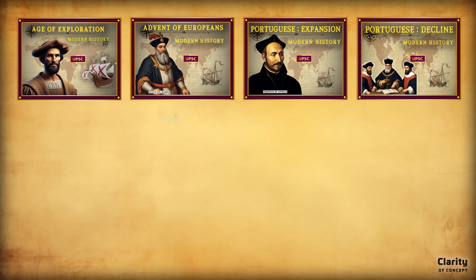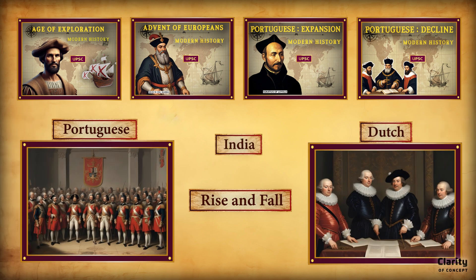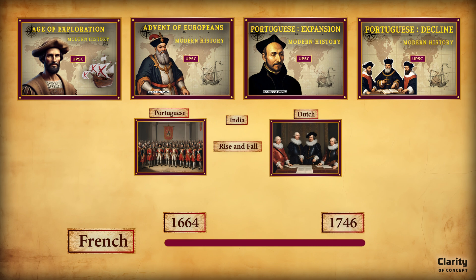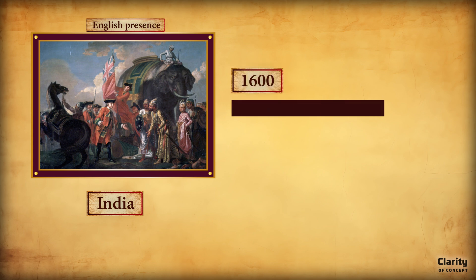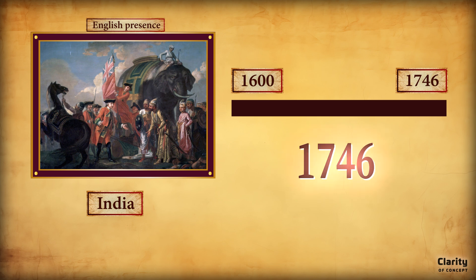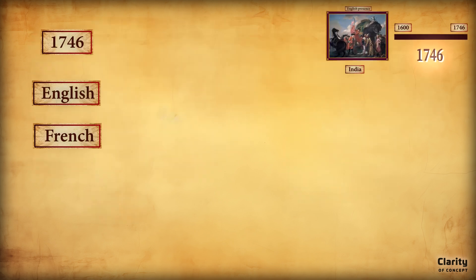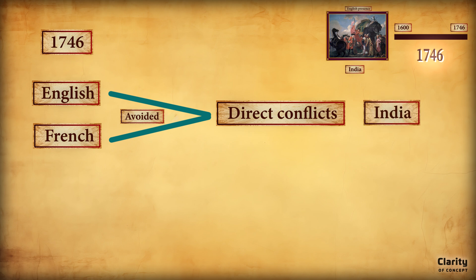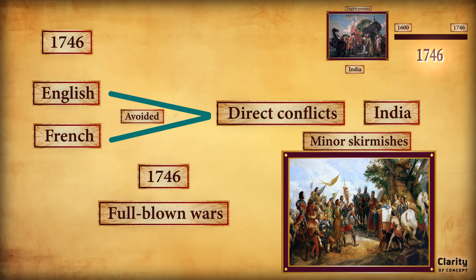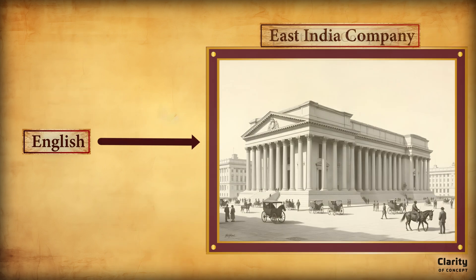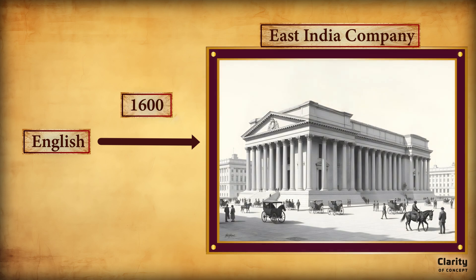In the last few videos, we explored the rise and fall of the Portuguese and the Dutch in India, followed by the story of the French from 1664 to 1746. In this video, we shall focus on the English presence in India, tracing their journey from 1600 to 1746. We have already explained in the previous video why the year 1746 holds such significance.